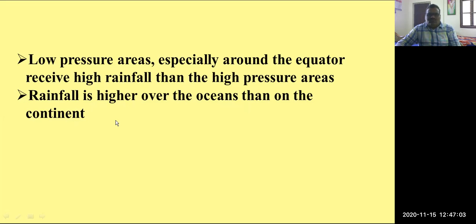Rainfall is higher over the oceans than over the continents. The oceans, which are water bodies, have a greater chance of evaporation. Oceans cover around 70 percent of the Earth's surface area. So the evaporation, condensation, and precipitation process continues more in ocean and water body areas. We can conclude that rainfall is more on the oceans when compared with the continental parts.